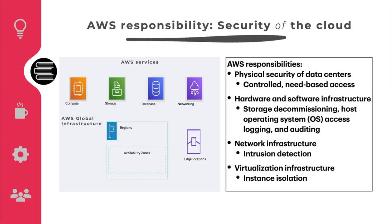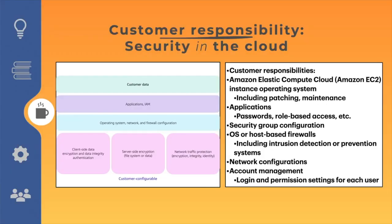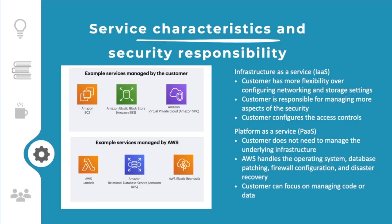The customer is responsible for the encryption of data at rest and in transit, ensuring the network is configured for security, managing security credentials and logins safely, configuring security groups, and configuring operating systems running on compute instances. The customer is responsible for security IN the cloud. AWS is responsible for the physical infrastructure: the physical security of data centers, hardware infrastructure, software infrastructure, and network infrastructure. While the cloud infrastructure is secured by AWS, customers are responsible for everything they put in the cloud.